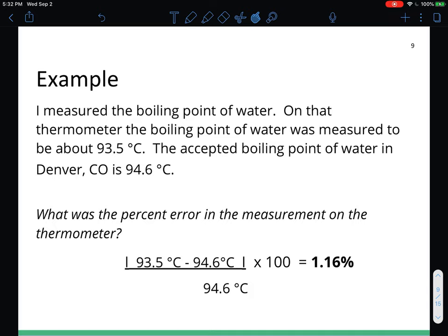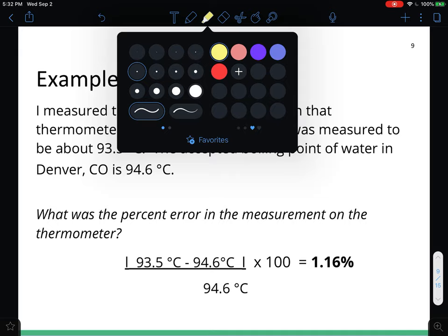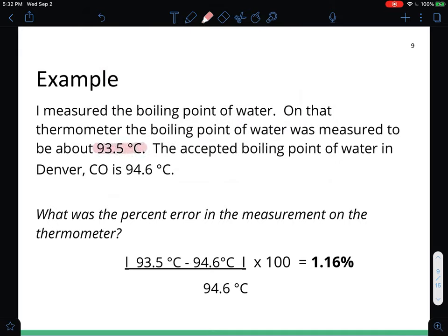Here's an example. I measured a boiling pot of water and the thermometer read the boiling pot of water to be 93.5 degrees Celsius, but the accepted boiling point of water in Denver is 94.6 degrees Celsius. What is the percent error? So we took the measured value or the experimental value that was put right here. Then we got the accepted or true value of the boiling point of water, subtracted the numerator. It would have been a negative number, but because it is an absolute value, it becomes positive, divided by the accepted and multiply by 100.